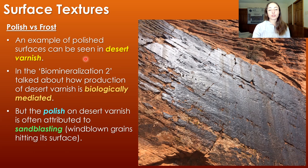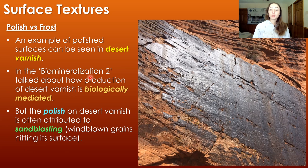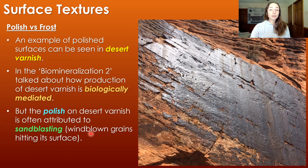An example of a polished surface can be seen in desert varnish. We talked about desert varnish in the biomineralization part two video regarding how it can be biologically mediated in its formation. But once it's formed, the polish can result from abiotic processes like sandblasting — basically wind-blown grains hitting the surface, making it smoother over time and eventually polished in appearance.